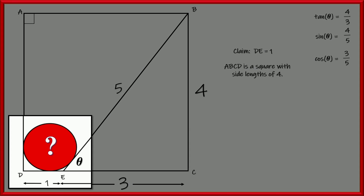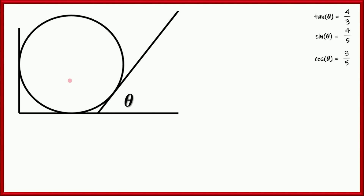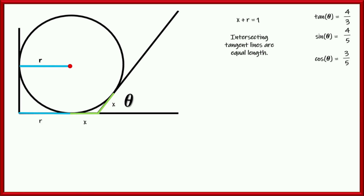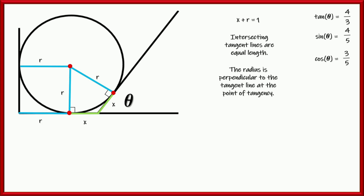Let's zoom in and take a look at our situation with our circle. We'll say the center is here and call the radius R. That means the distance down here is R. In green we don't know what that is, so let's call it X. I know that X plus R equals 1 because that's from D to E. I also know this other distance is X because intersecting tangent lines have the same distance. The radius at each of these points is perpendicular to the tangent line at the point of tangency.